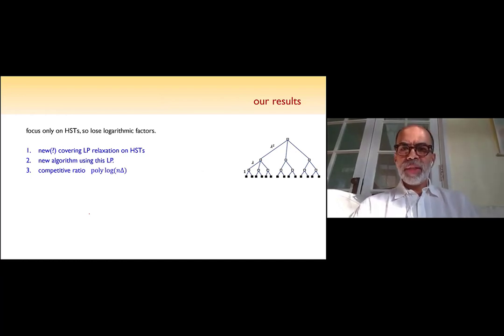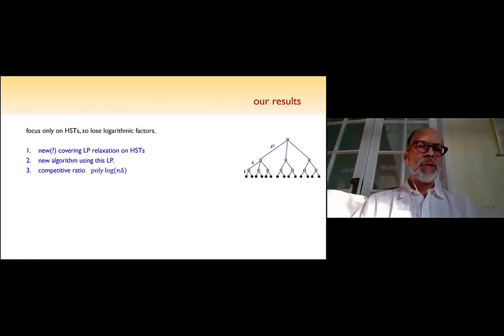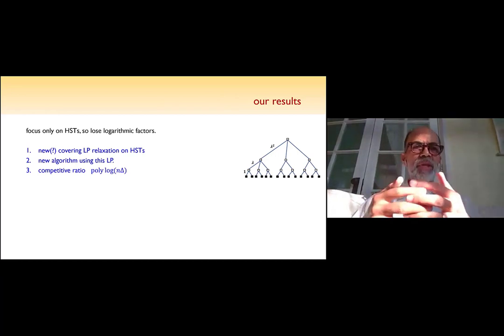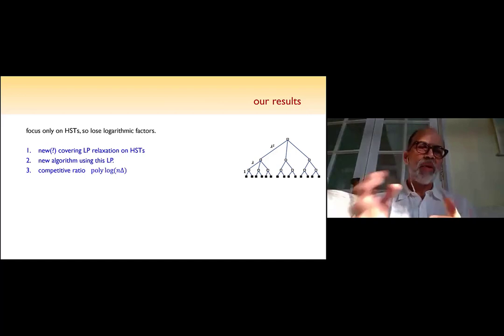In particular, a lot of this work goes via something called HSTs. So maybe I'll just remind you what HSTs are in the next slide. Yeah, so this is the work known. And also, maybe I should mention that this problem generalizes the paging problem. For paging, the answer is completely understood. But for K-server, the problem is still quite interesting. Okay. So most of the work is going to be on these things called HSTs. You should really think of these as very symmetric looking trees, where the edge lengths increase exponentially.